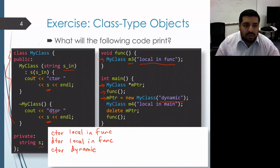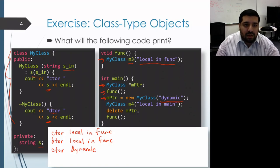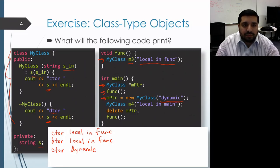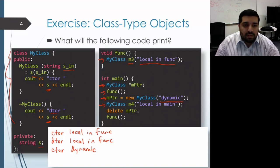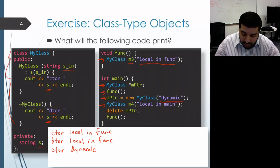The new operator, aside from creating this MyClass object and invoking its constructor, gives us back the address of that newly created object, so m_pointer will be pointing at that new MyClass object. Moving on to the next line, we create a local variable of MyClass type, which invokes a constructor. We pass in the string "local in main", so we get CTOR local in main.